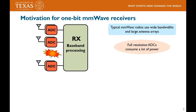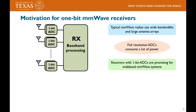Imagine hundreds of ADCs operating at several giga samples per second — the power consumption can be on the order of several watts, and this is a big problem. One approach to cut down the power consumption is to reduce the resolution of the ADCs. In the extreme case, this resolution can be as low as 1-bit. Such 1-bit receivers offer great promise for wide-band mmWave systems.